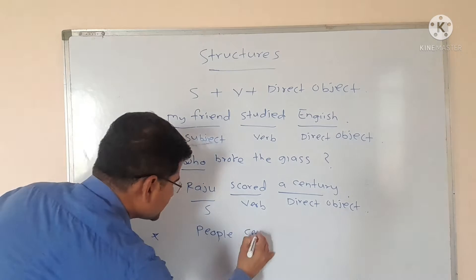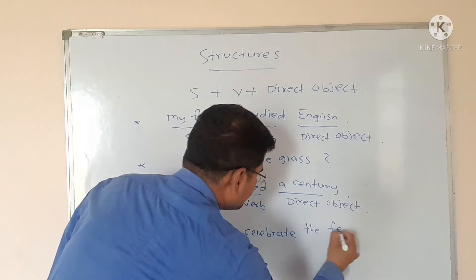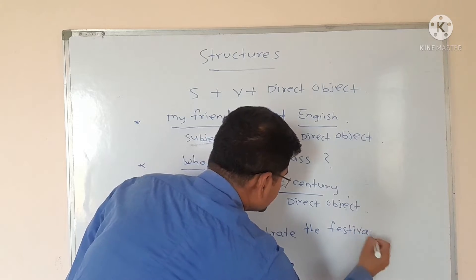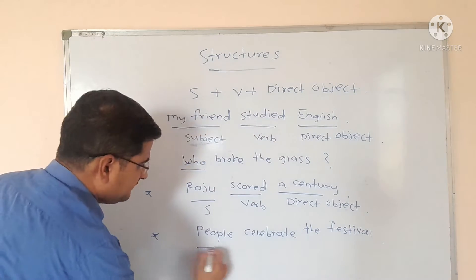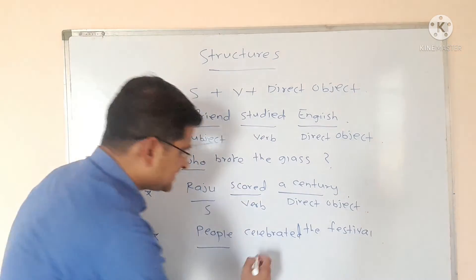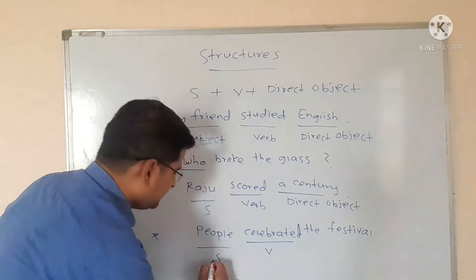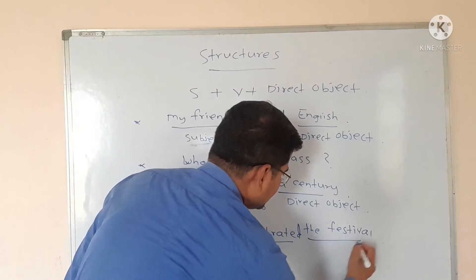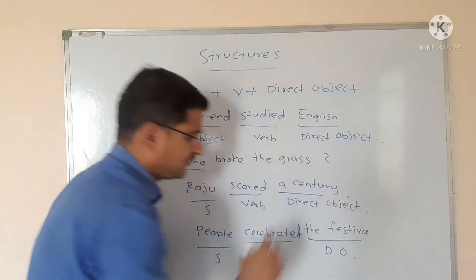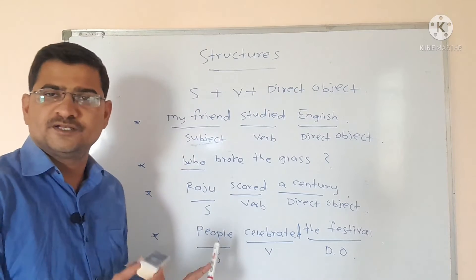People celebrated the festival. Here, 'people' is the subject, 'celebrated' is the verb, and 'the festival' is an example of a direct object. We will study a few more examples — please have a look at the board.